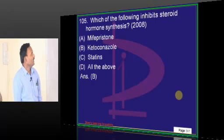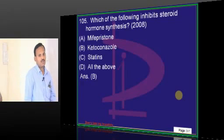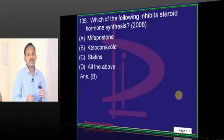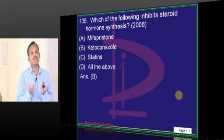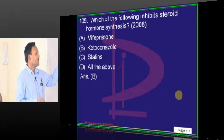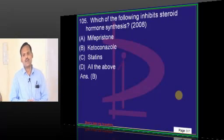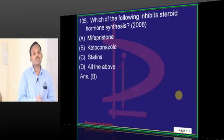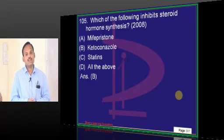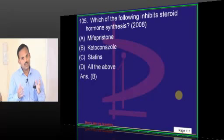Which of the following inhibits steroid hormone synthesis? The enzymes required for steroid hormone synthesis are also responsible for synthesis of ergosterol in the fungal cell wall. Mostly azole antifungals have this mechanism of action. Here the azole antifungal is ketoconazole. All azole antifungals act by inhibiting fungal sterol synthesis, and they share some enzymes in common with human steroid hormone synthesis. Therefore, all azole antifungals carry increased risk of adrenal hormone production inhibition.